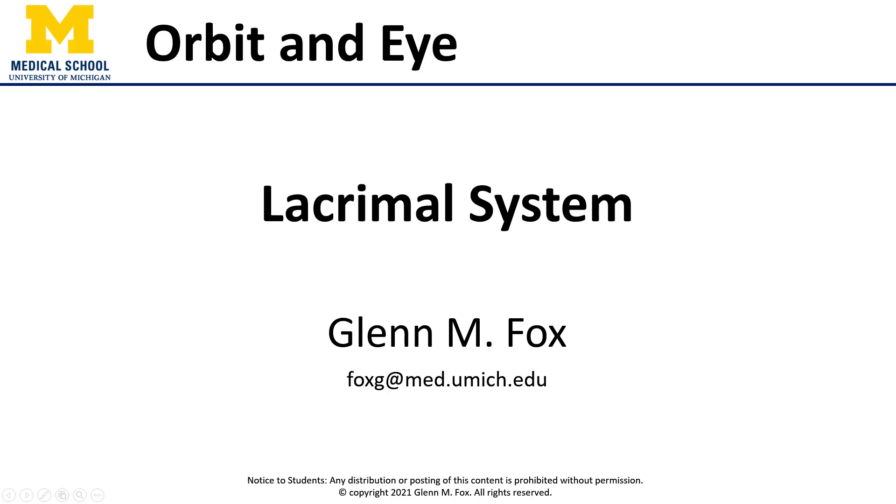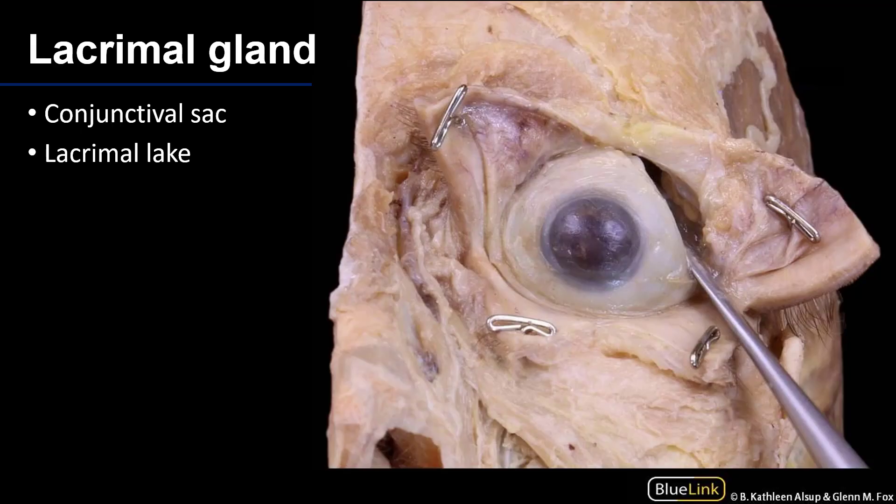Let's talk about the lacrimal system. The lacrimal system includes the lacrimal gland and the pathway of tears from the gland to the inferior nasal meatus of the nasal cavity.